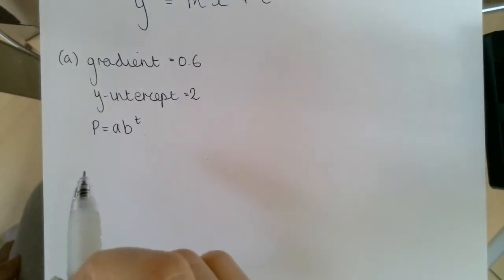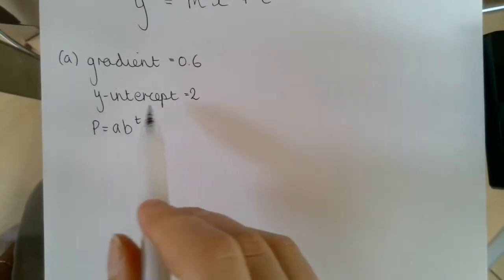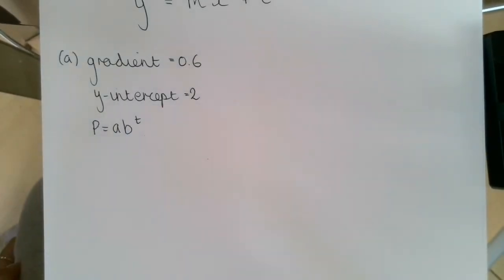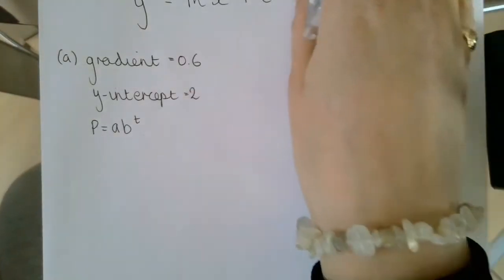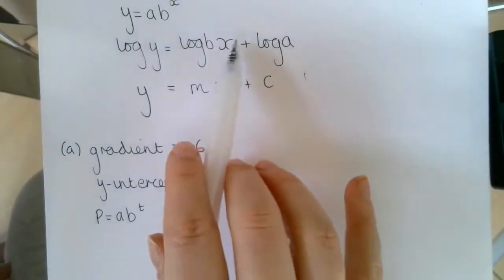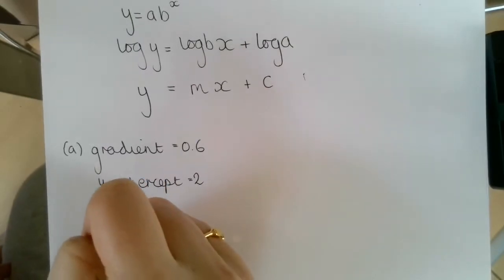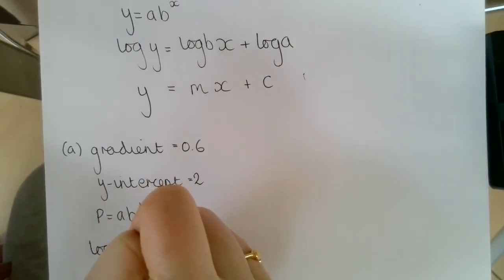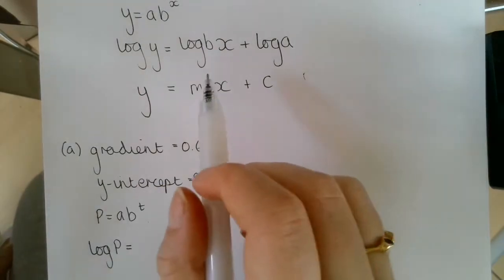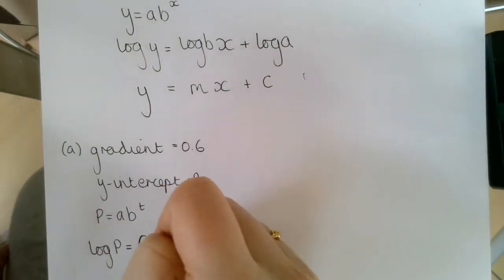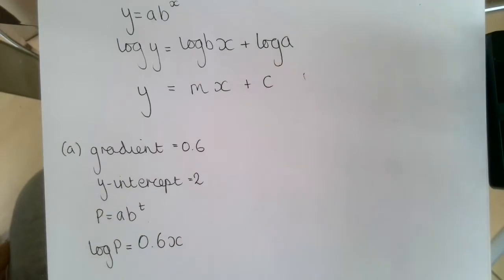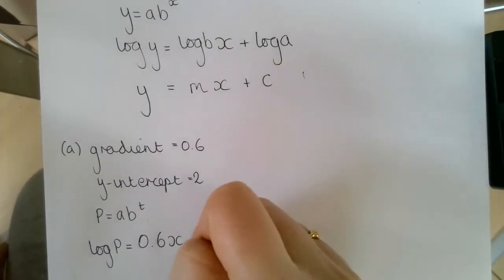So for part a, it says write down an equation for the line we would use when modeling this using logarithms. Well, we're going to use this form of the straight line here. So we would have log p is equal to the gradient, that's 0.6, and we're going to add that y-intercept.